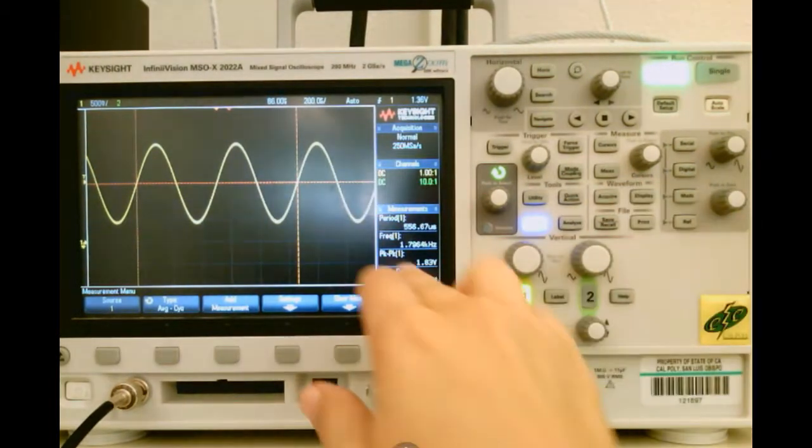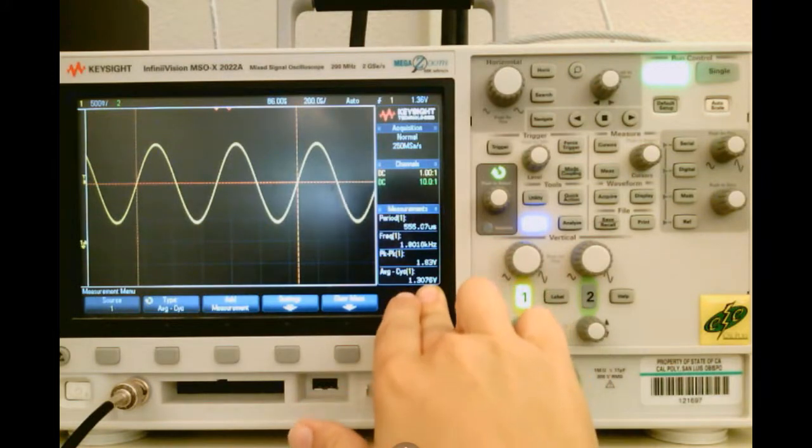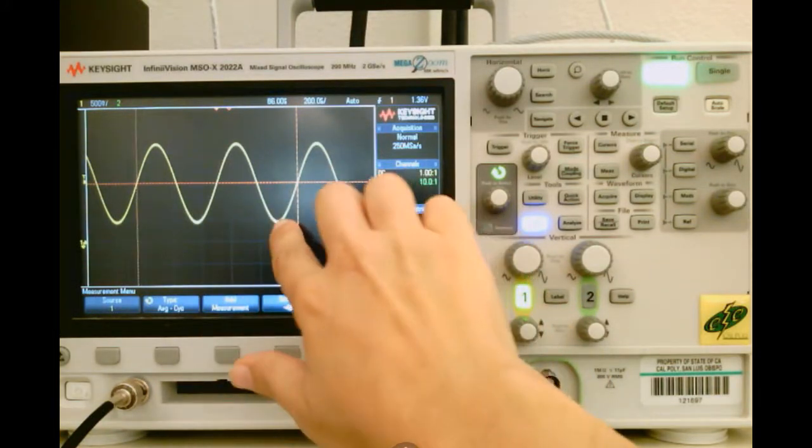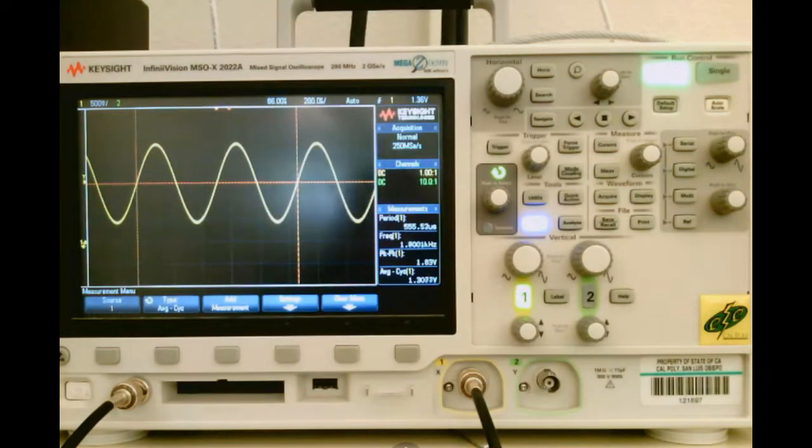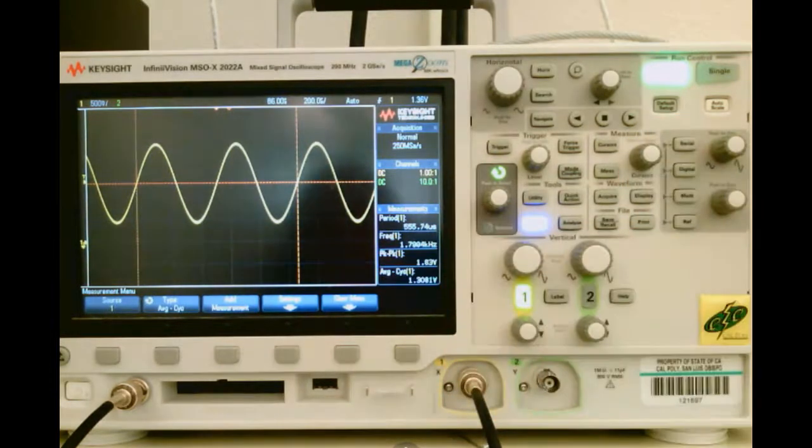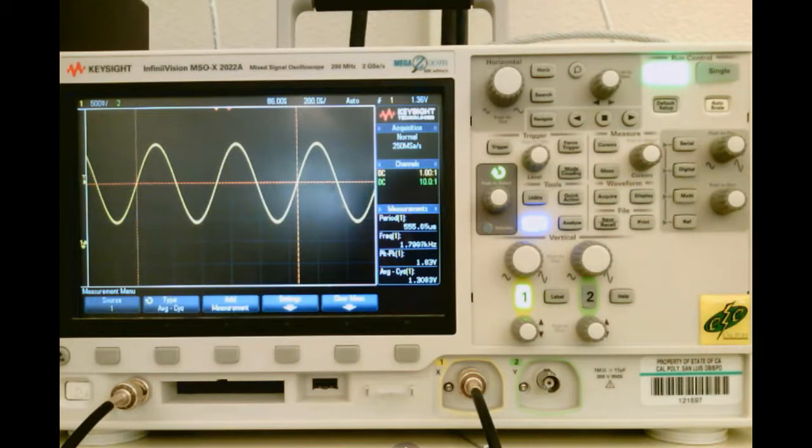The tool itself, using the measure menu, will give you average values. Sometimes if your waveform is very noisy, it might not give you the most accurate value that you're looking for. And using the cursors to manually select it will give you a better measurement. But it's there for you if you don't need that precision and if you're looking for just a quick measurement.